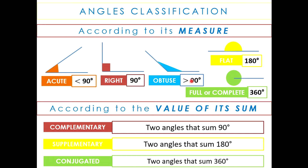So we have the obtuse angle, which is greater than 90 degrees; the flat angle, that is 180 degrees — you can see there is only a straight line, measured from one end to the other. And then we have the full or complete angle, that is 360 degrees. There is also a classification of angles: complementary angles, whose sum is 90 degrees; supplementary angles, whose sum is 180 degrees; and conjugated angles, whose sum is 360 degrees.